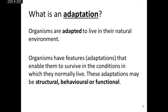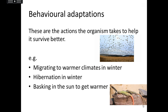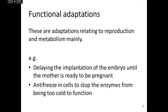There are three different types of adaptations, but you only really need to know about one of them — though it might be useful to know the other two as well. They are structural, behavioural, and functional adaptations. Behavioural adaptations are things the animal or plant will do to help itself survive. For example, birds will migrate somewhere warmer in winter, bears hibernate to avoid the cold, and reptiles bask in the sun to warm up their cold blood so their body can carry out processes at the right temperature.